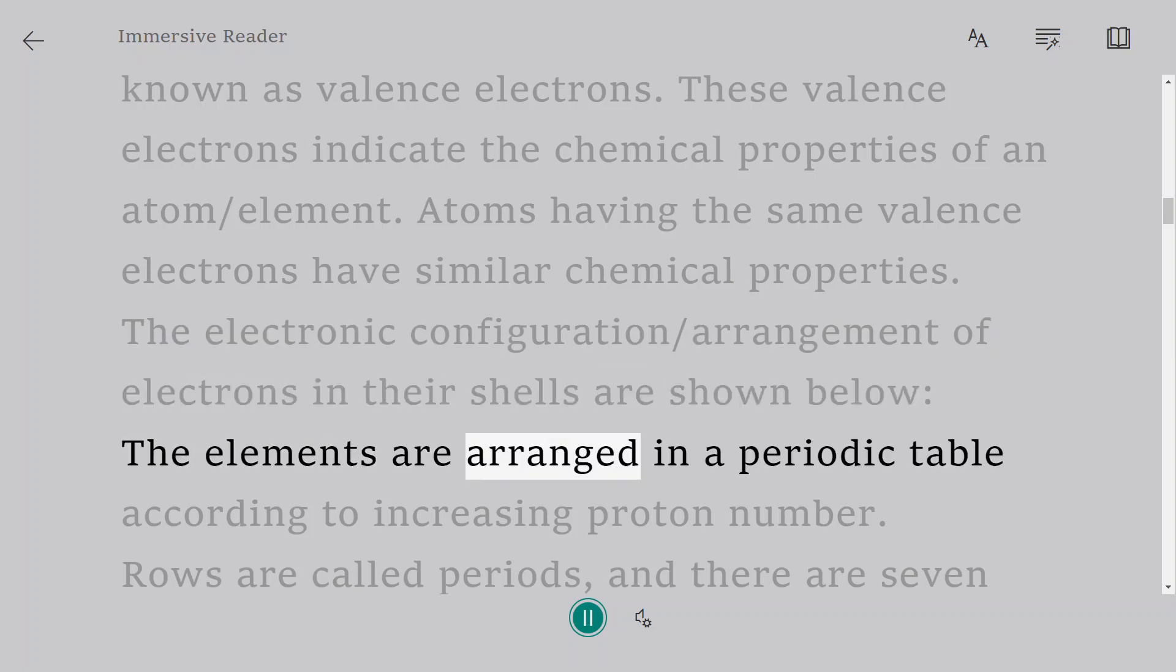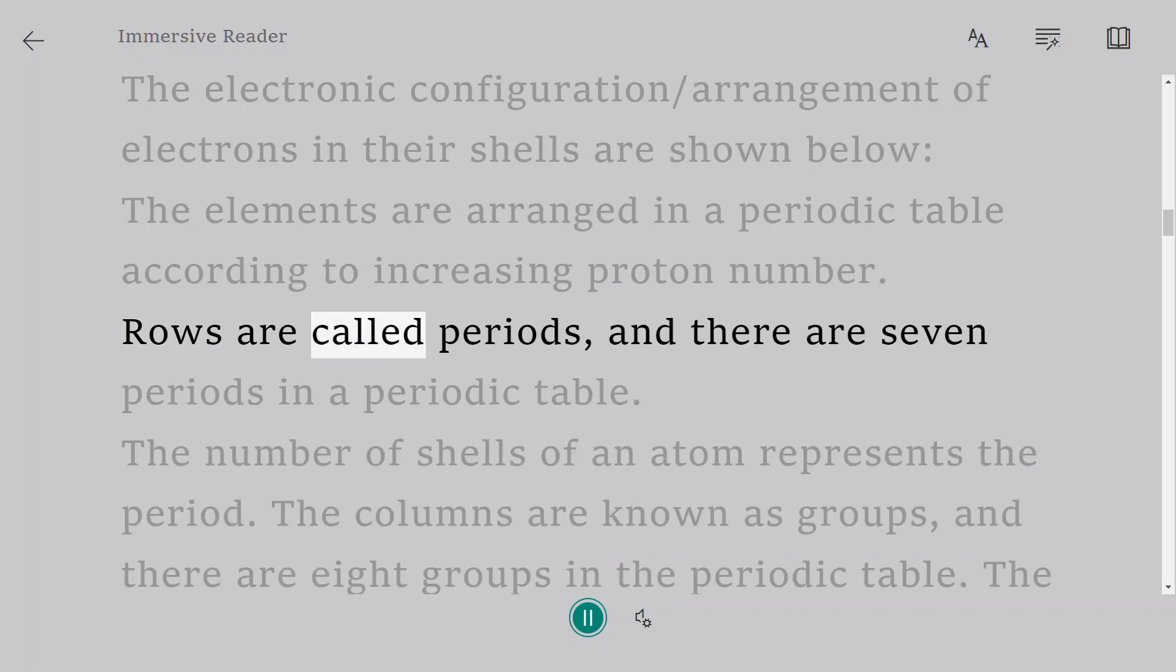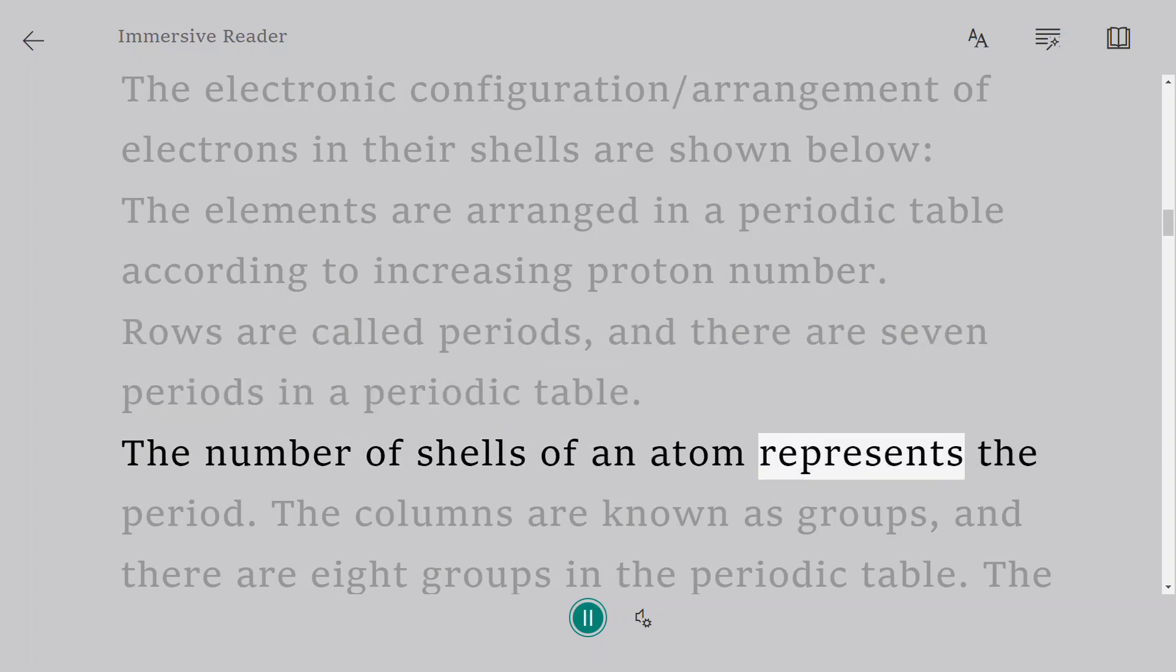The elements are arranged in a periodic table according to increasing proton number. Rows are called periods, and there are seven periods in a periodic table. The number of shells of an atom represents the period.